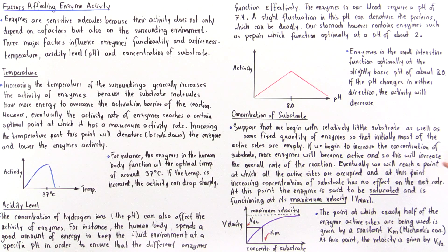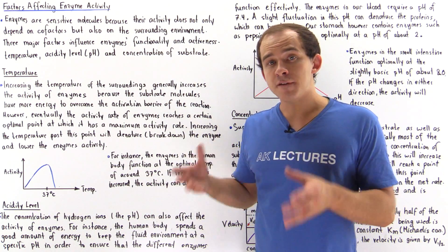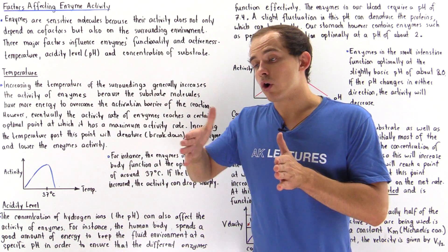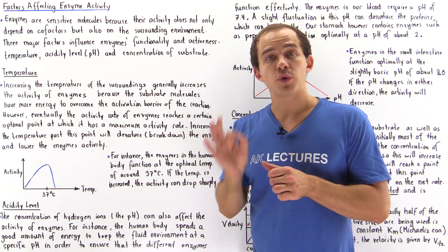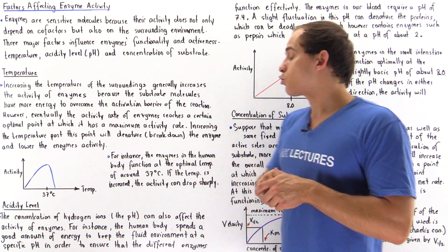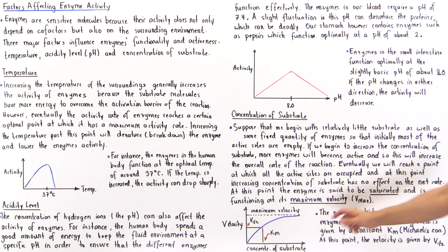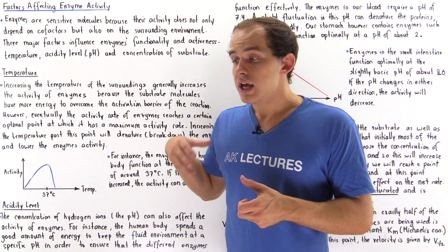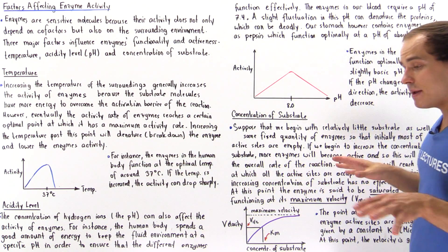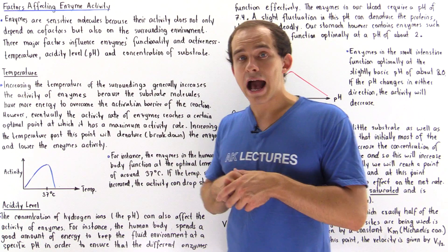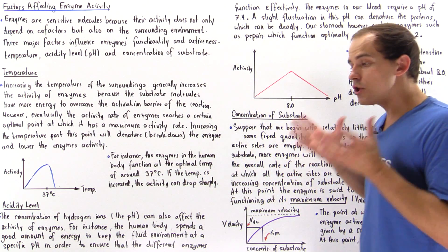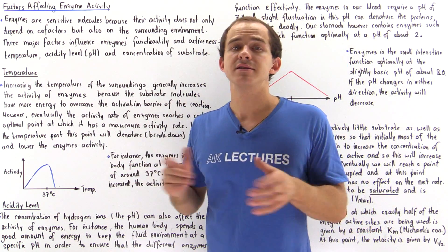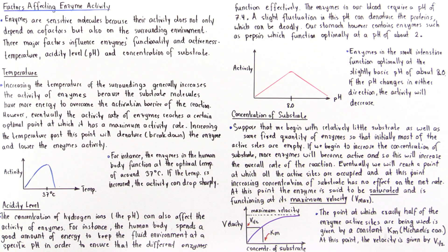Eventually, we will reach a point at which all the active sites on all our enzymes are filled. At that point, our enzyme activity has reached a maximal rate, known as the maximum velocity or Vmax, and the enzyme is said to be saturated. By increasing the concentration of substrate beyond this point, we are not affecting the rate of enzyme activity, because all those active sites are already filled and occupied.